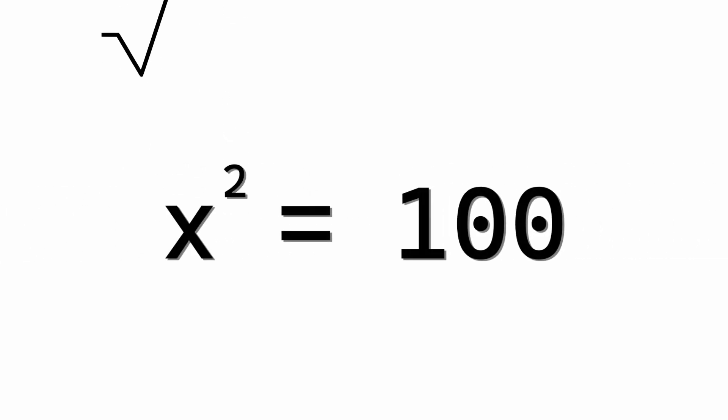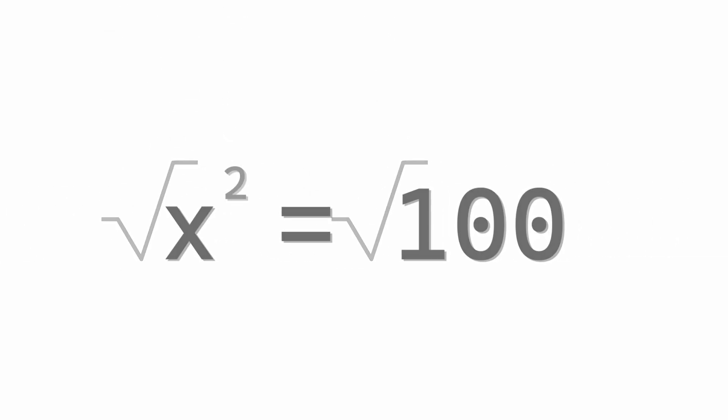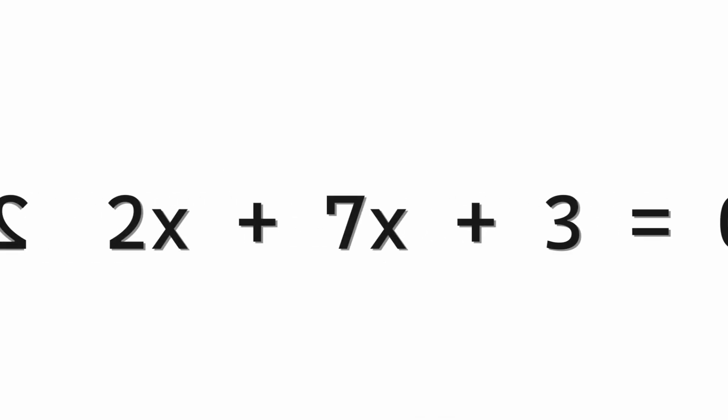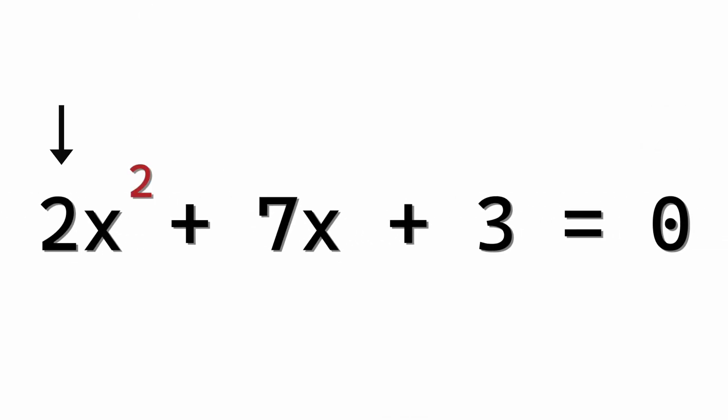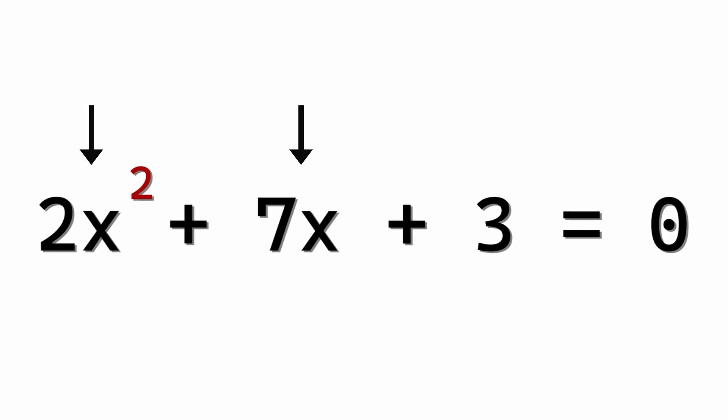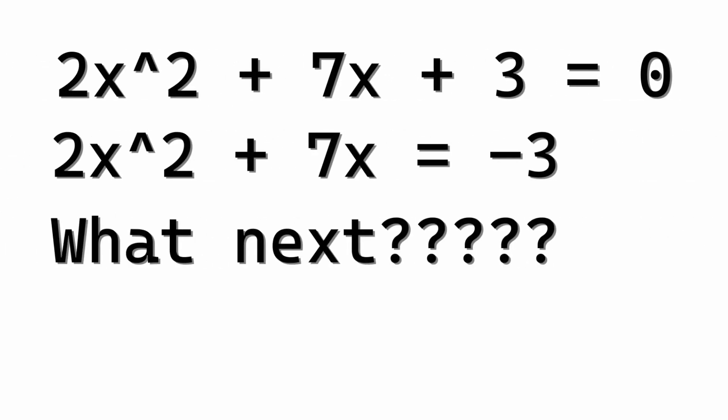Simple quadratics such as this can be solved through square rooting, but this doesn't always work. Take this. It is still a quadratic, except now it has a linear term added onto it. You can no longer rearrange it, so what can you do?